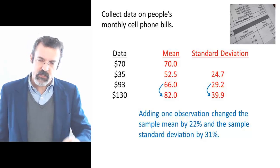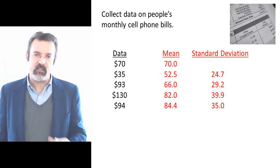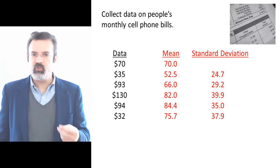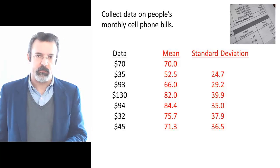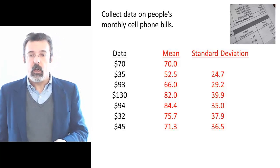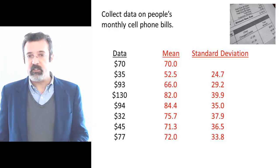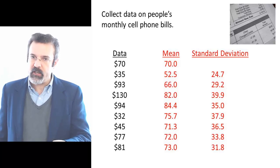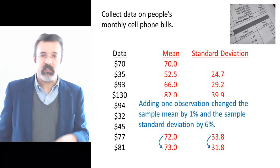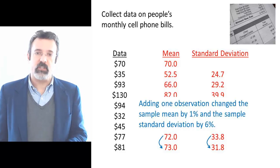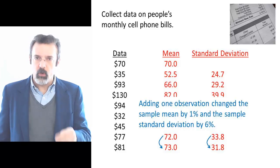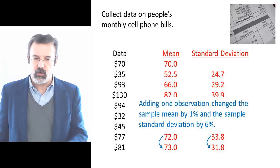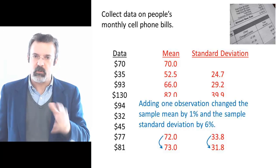Now notice what happens. As we continue to add data to our dataset, we start to reach a point where additional observations don't have much of an effect on the sample mean and the sample standard deviation. For example, when we have eight observations, our sample mean is 72 and the sample standard deviation is 33.8. If we add one more observation, our sample mean changes a little bit to 73 and our sample standard deviation changes a little bit to 31.8.